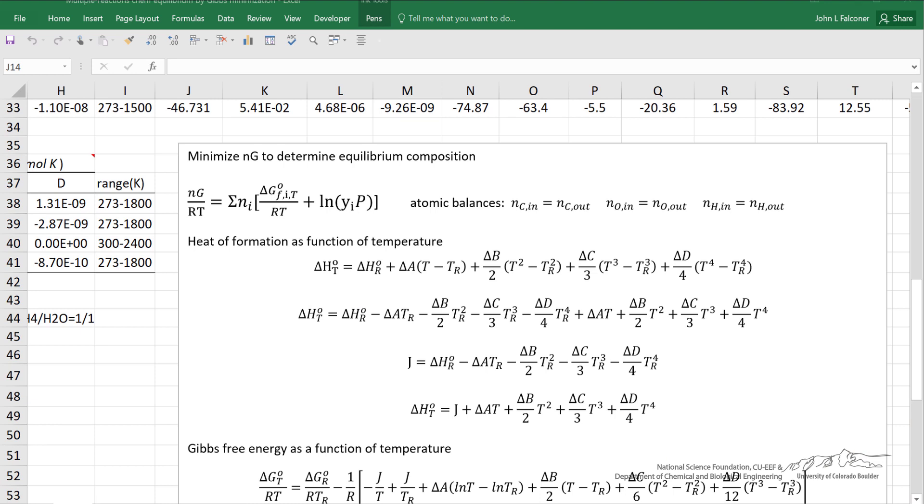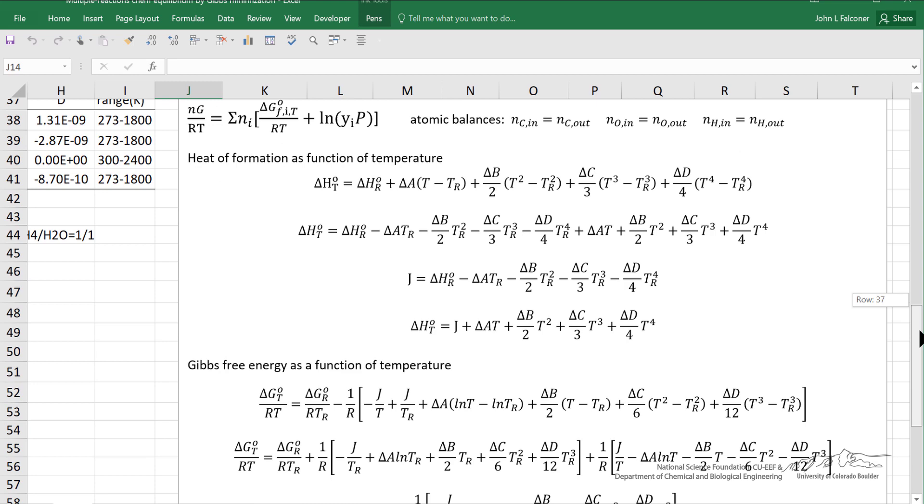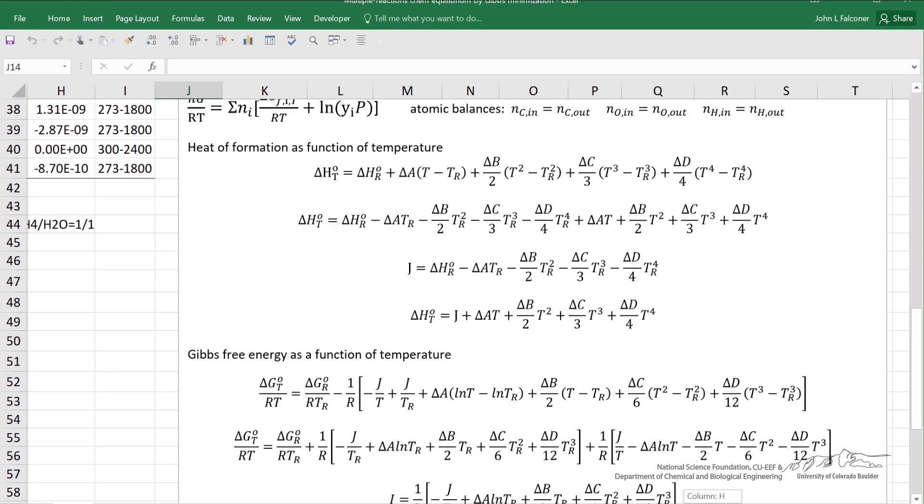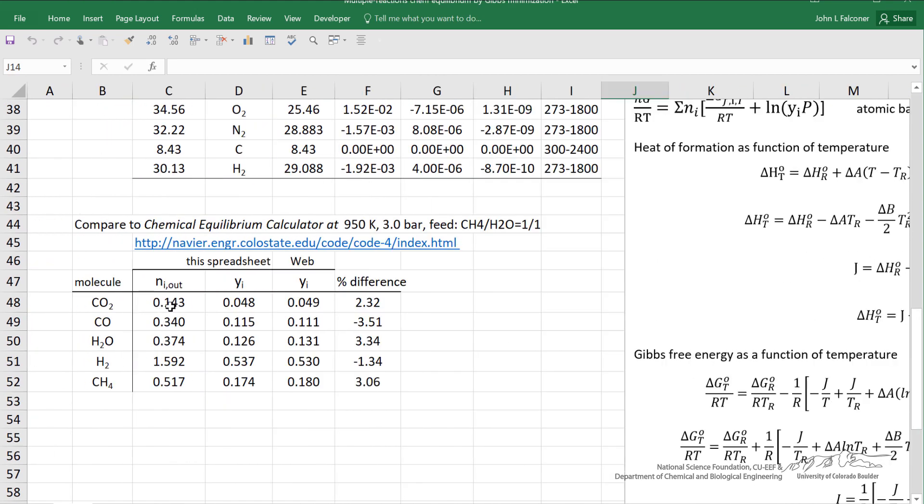You can see the spreadsheet contains the equations used. Here's the total Gibbs free energy. We're calculating the atom balances, the heat of formation which includes heat capacity terms, and the Gibbs free energy of formation, both being calculated as a function of temperature. And then here I've copied the solution number of moles out, the mole fraction, and then I've listed the mole fraction from this website, a chemical equilibrium calculator. You notice the numbers are pretty close.